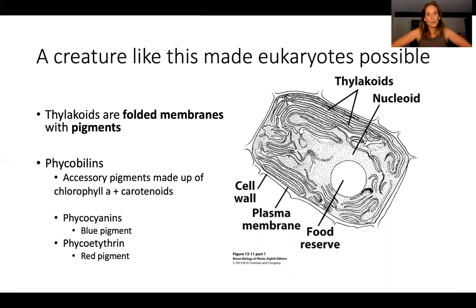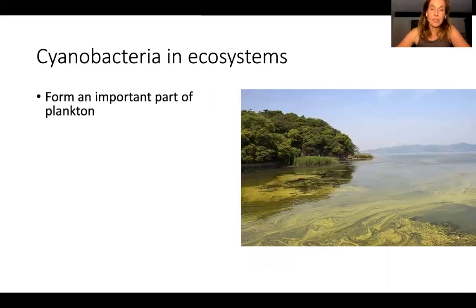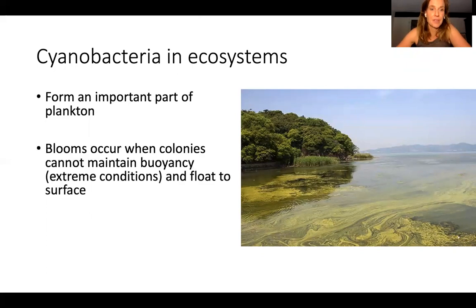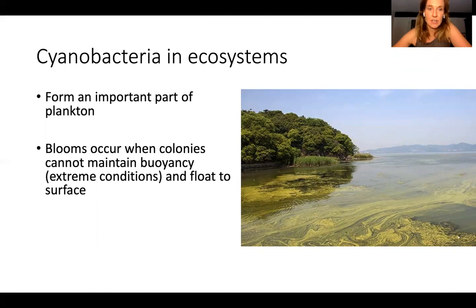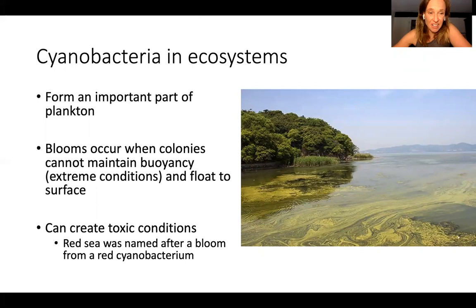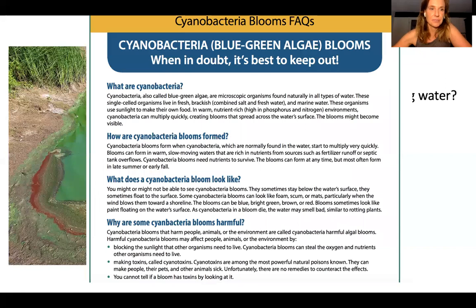These photosynthetic organisms became what we now know as chloroplasts through the endosymbiotic theory — we're going to talk about that in detail. I just wanted this class to be about who the players were, at least the bacterial players. What do these organisms do in ecosystems? Cyanobacteria are a really important part of the plankton food web. There can be significant blooms when it gets too hot or when there are problems with osmoregulation and they can't maintain their buoyancy — they'll float to the surface.